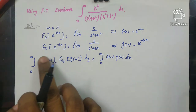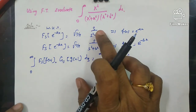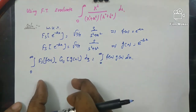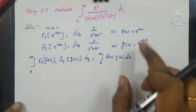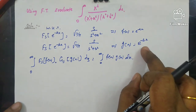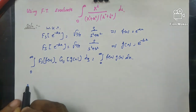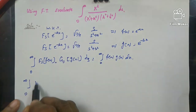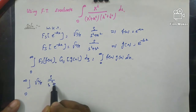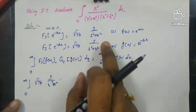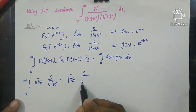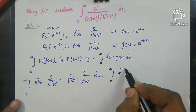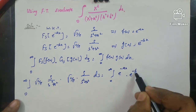Substituting Fs[f(x)] = root(2/π) · s/(s² + a²) and Fs[g(x)] = root(2/π) · s/(s² + b²), and with f(x) = e^(−ax) and g(x) = e^(−bx), we get: (2/π) times the integral from 0 to infinity of s²/[(s² + a²)(s² + b²)] ds equals the integral from 0 to infinity of e^(−ax) · e^(−bx) dx.